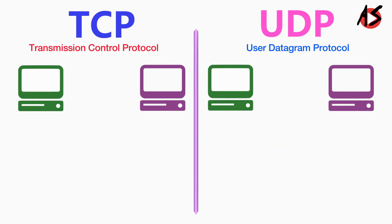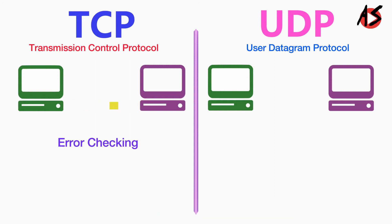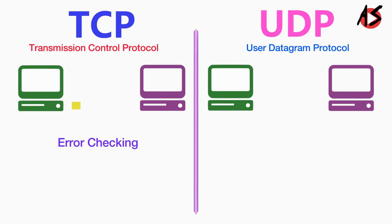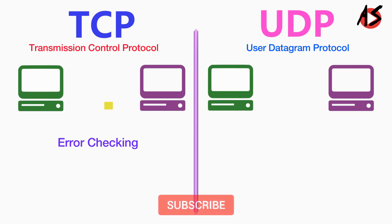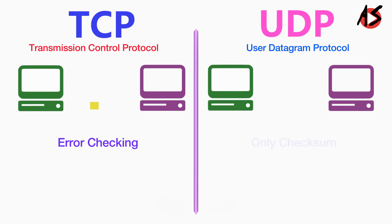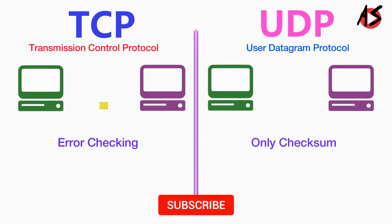TCP provides extensive error-checking mechanisms because it provides flow control and acknowledgement of data. While UDP has only the basic error-checking mechanism, like checksum.